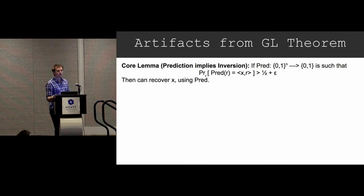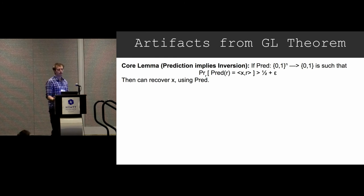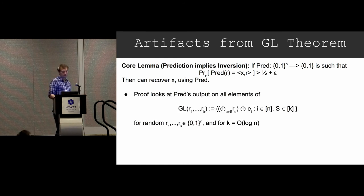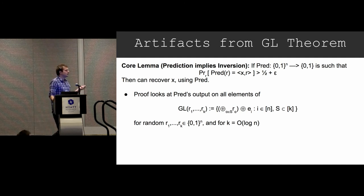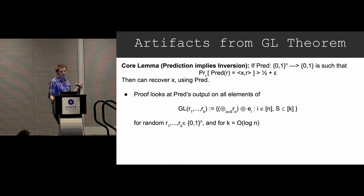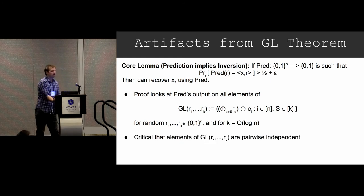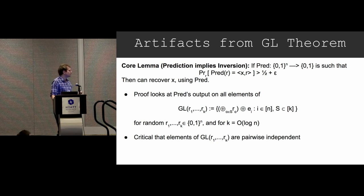I want to give a slide to the Goldreich-Levin theorem to describe those artifacts. The core of the Goldreich-Levin theorem is a prediction-implies-inversion algorithm. It says that if you have a predictor that can predict the inner product with some secret value X, you can use the predictor to reconstruct X. The way it works is you look at the output of the predictor on every string in a special set called the Goldreich-Levin set. From a technical perspective, it's really critical that the elements of this Goldreich-Levin set are pairwise independent.